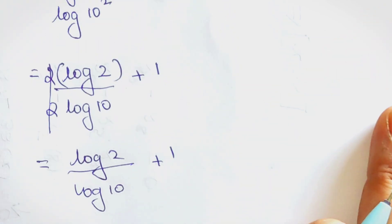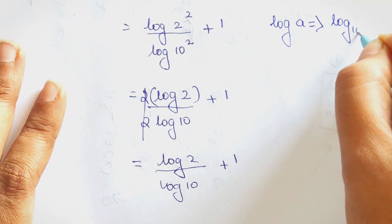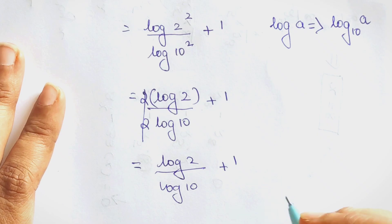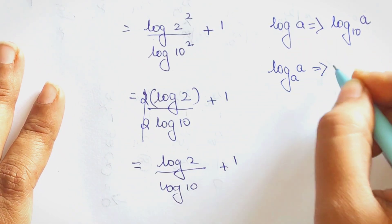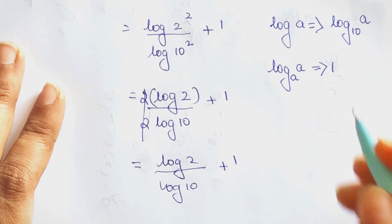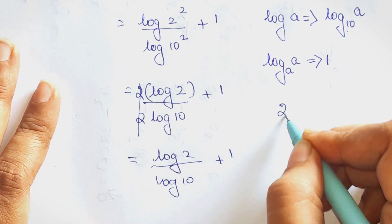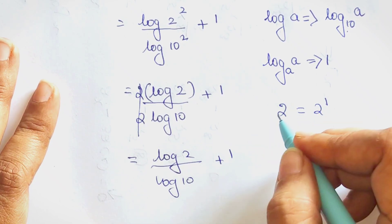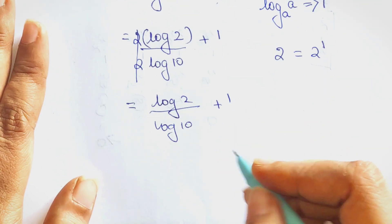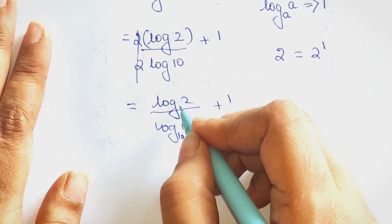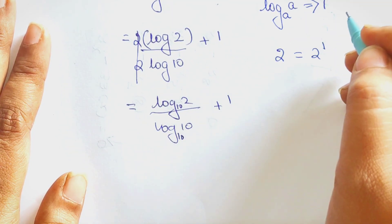Remember, whenever we want to find the value of any log to the base of 10, log of any number to the same base equals 1. We don't write base 10 every time because it is understood, just as we write the number 2 rather than 2 raised to 1. So here, log 10 to the base 10 equals 1.